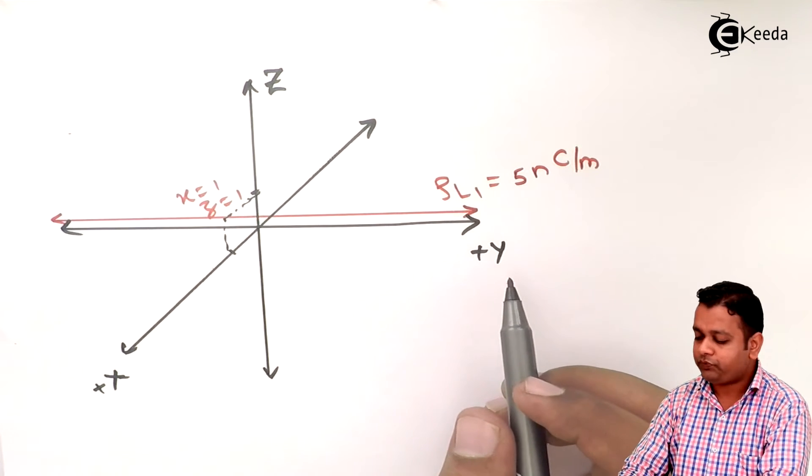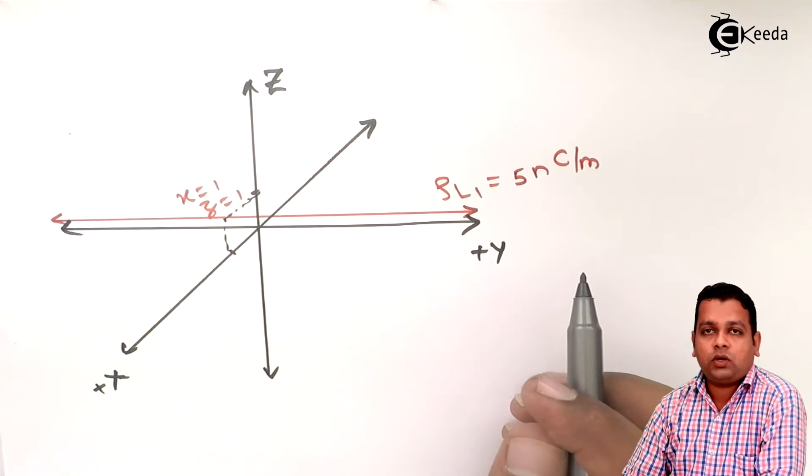Now the line charge is having line charge density. Let us denote it ρL1 and the value is given to us 5 nanocoulomb per meter, nano means 10 to power minus 9.